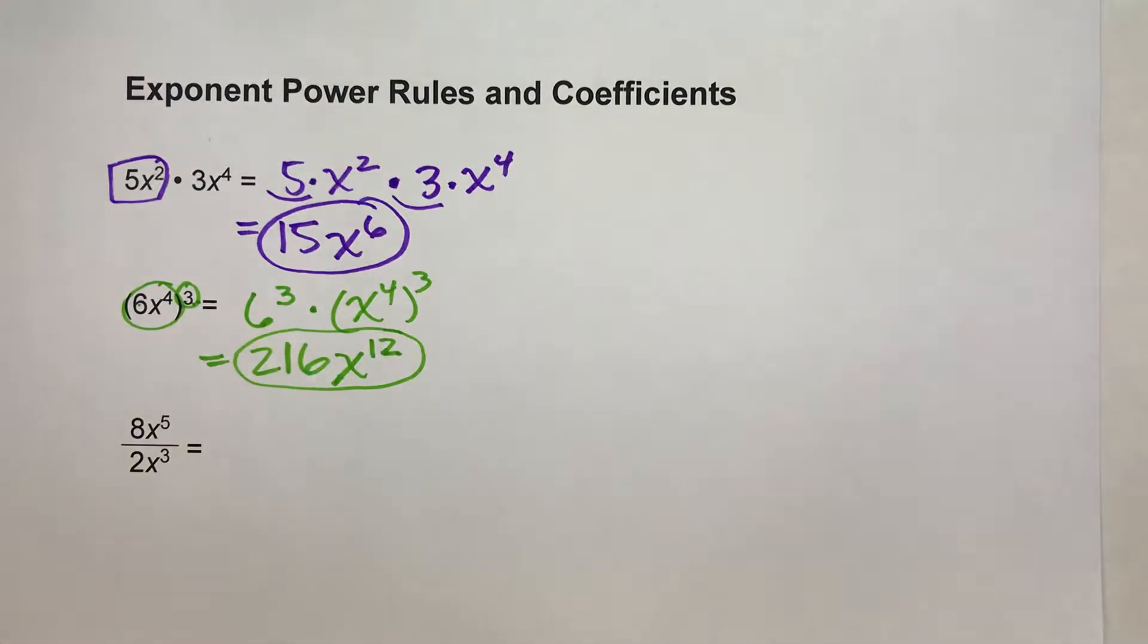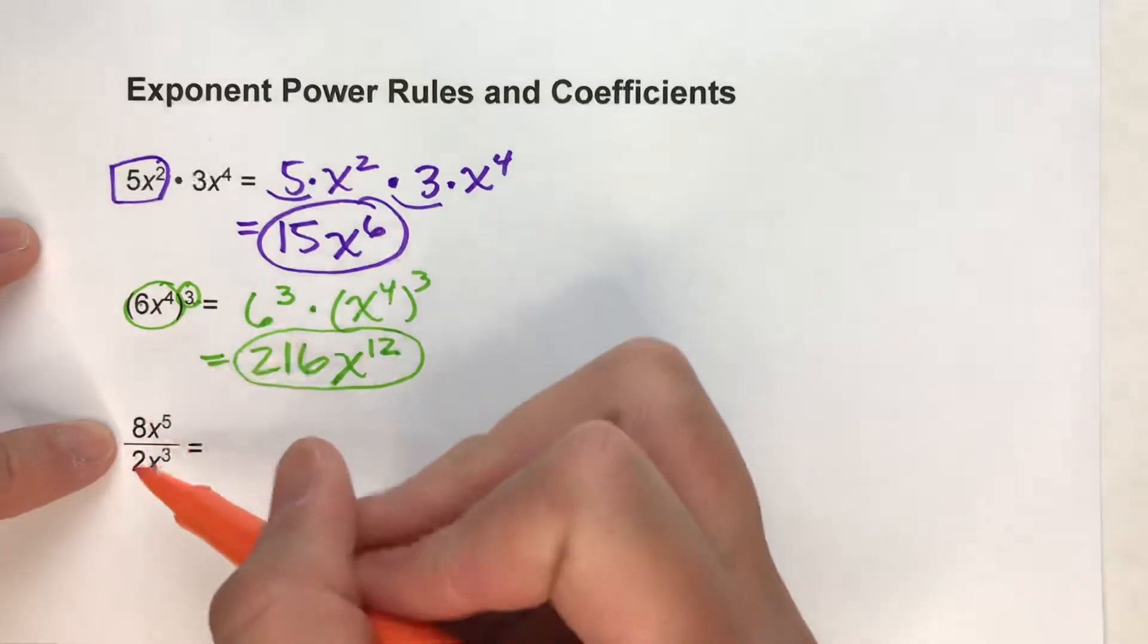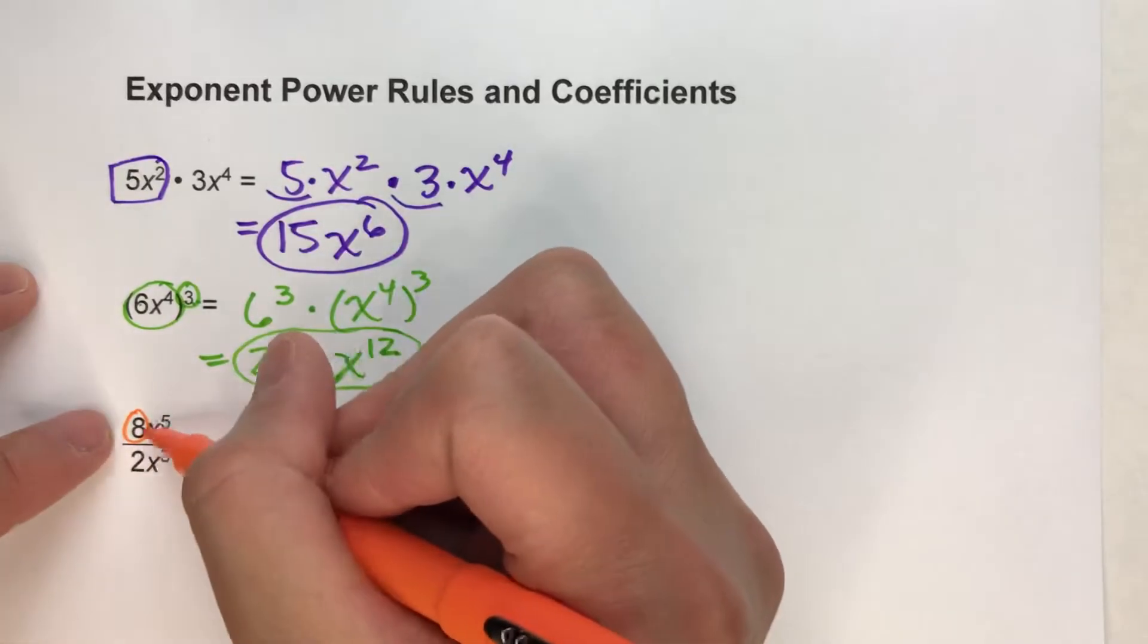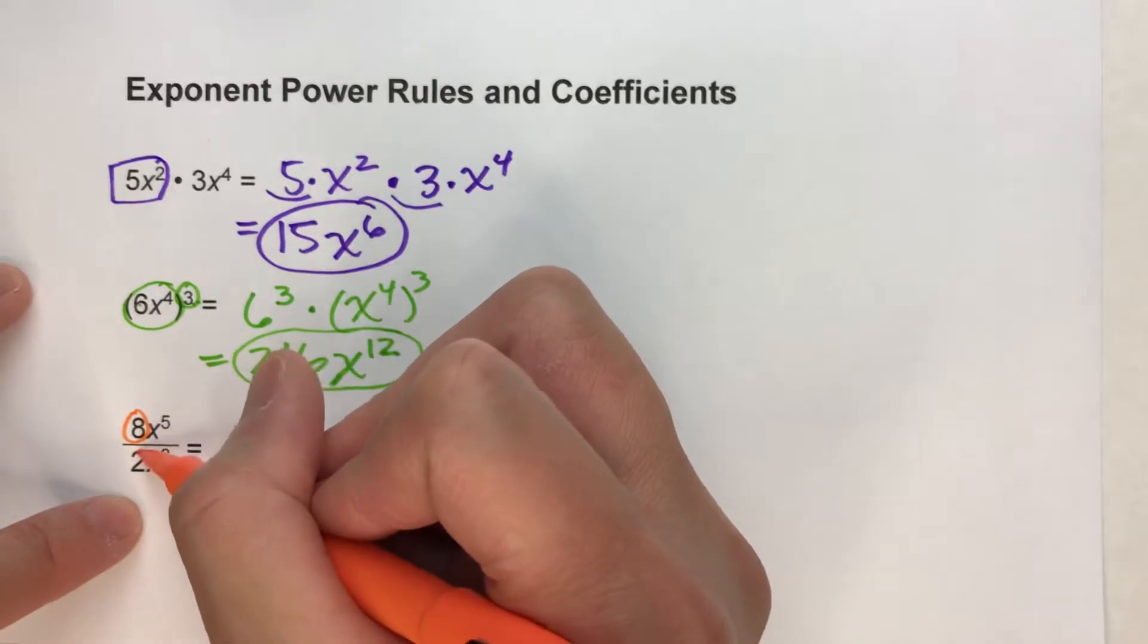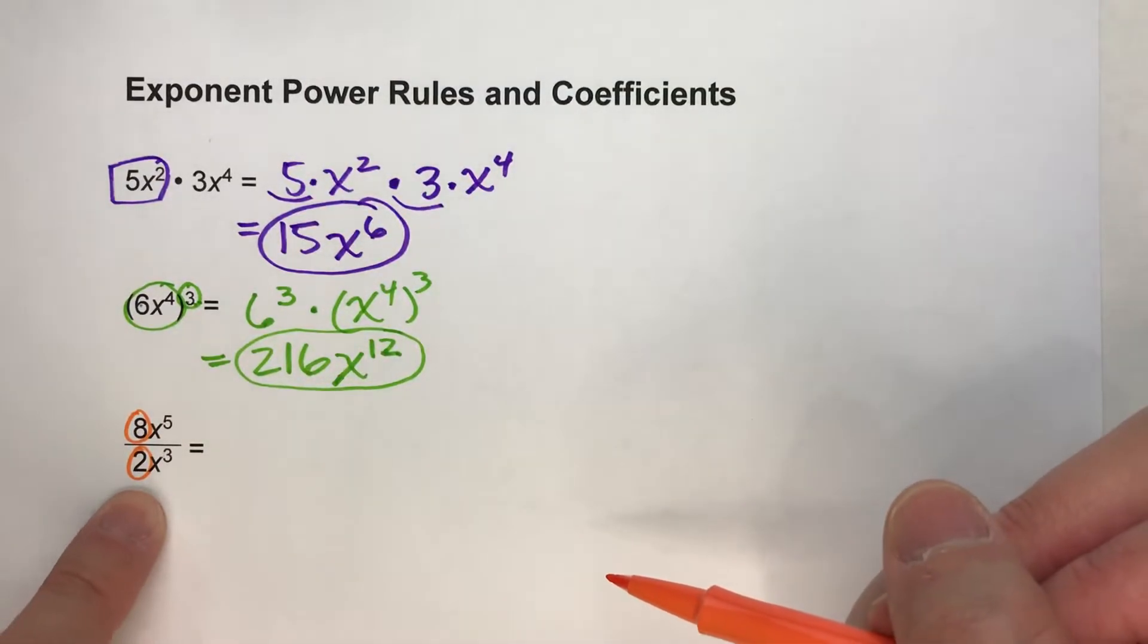We'll do one last one. This one's division. We've got 8x to the fifth divided by 2x to the third. Again, here's your coefficient times x to the fifth, and down below, here's your coefficient for the x to the third. So we're going to be dividing this time.